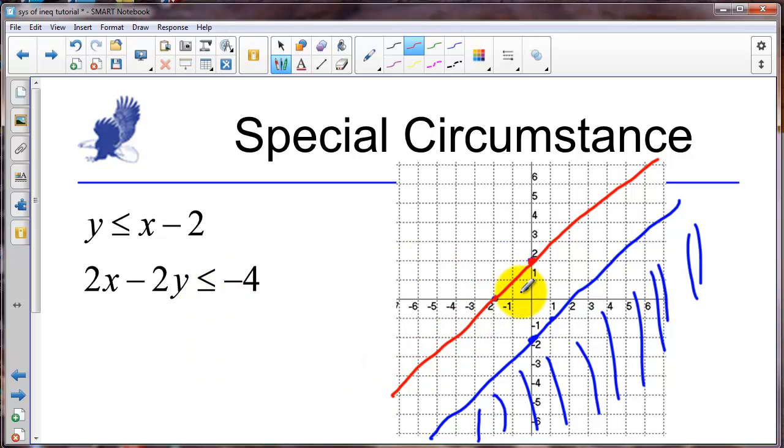And we can see those two lines are parallel. And if I pick the test point 0, 0 on this one to find which side to shade. So if I pick this as my test point. If I put 0 minus 0 is less than negative 4, that's false. So we have to shade over here.